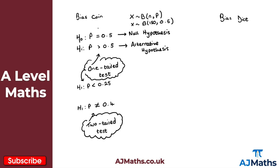This is an important distinction — be careful not to take this as definitive. We're saying there is evidence to suggest that the coin is biased; we can't say for certain that the coin is biased. If we get a value less than 120 tails, we'd accept H0 and say the coin is fair — there's no evidence to suggest the coin is biased.